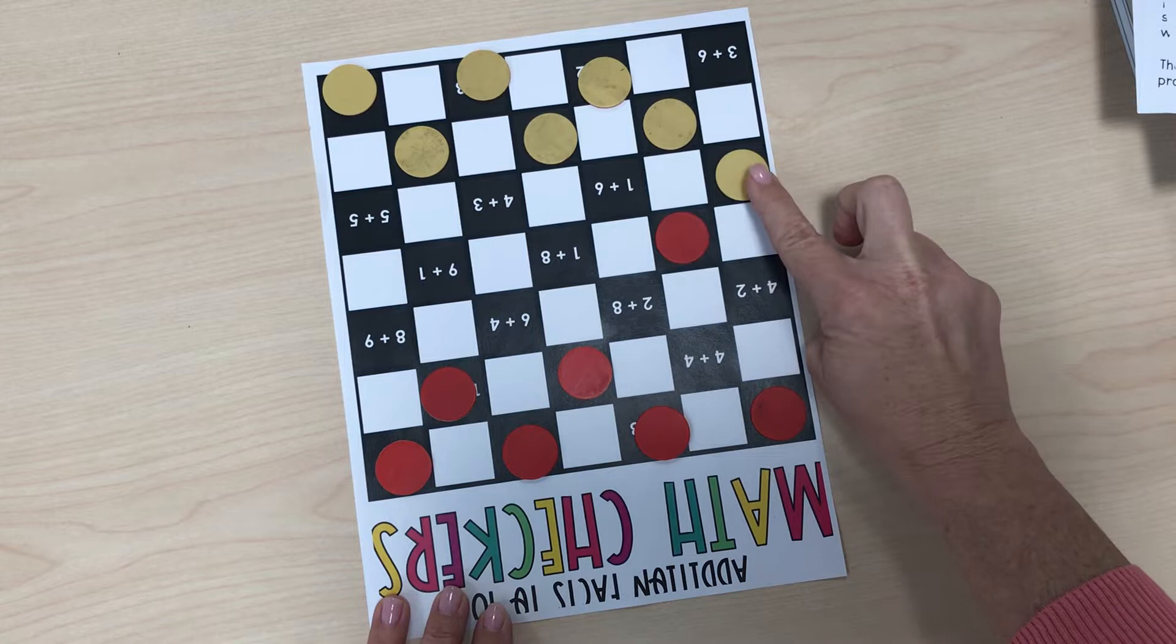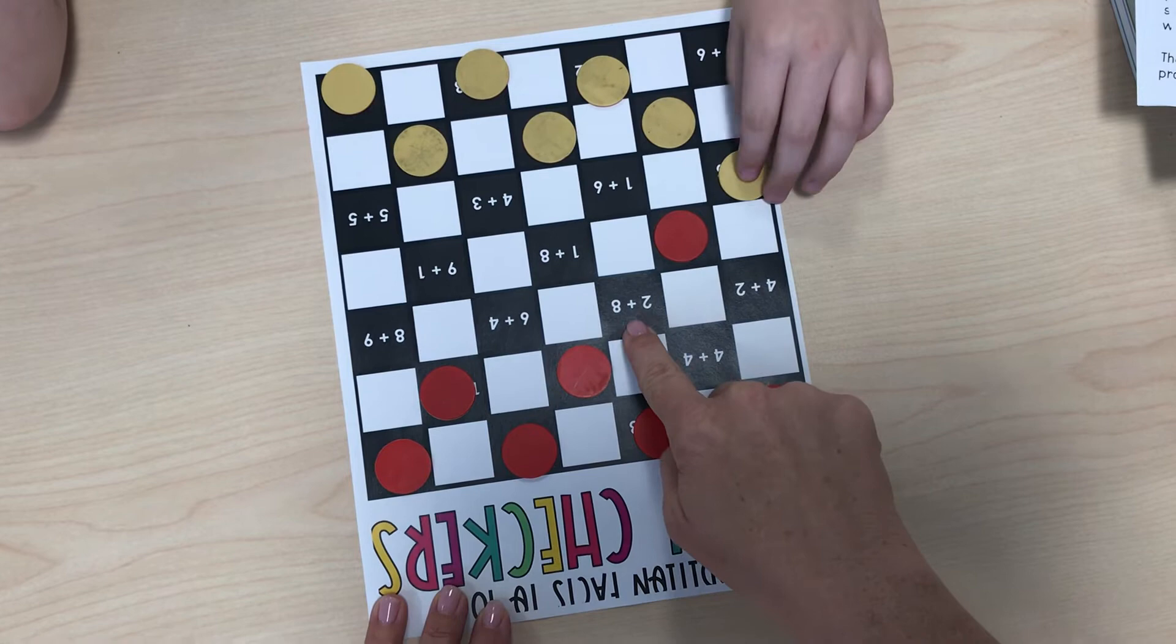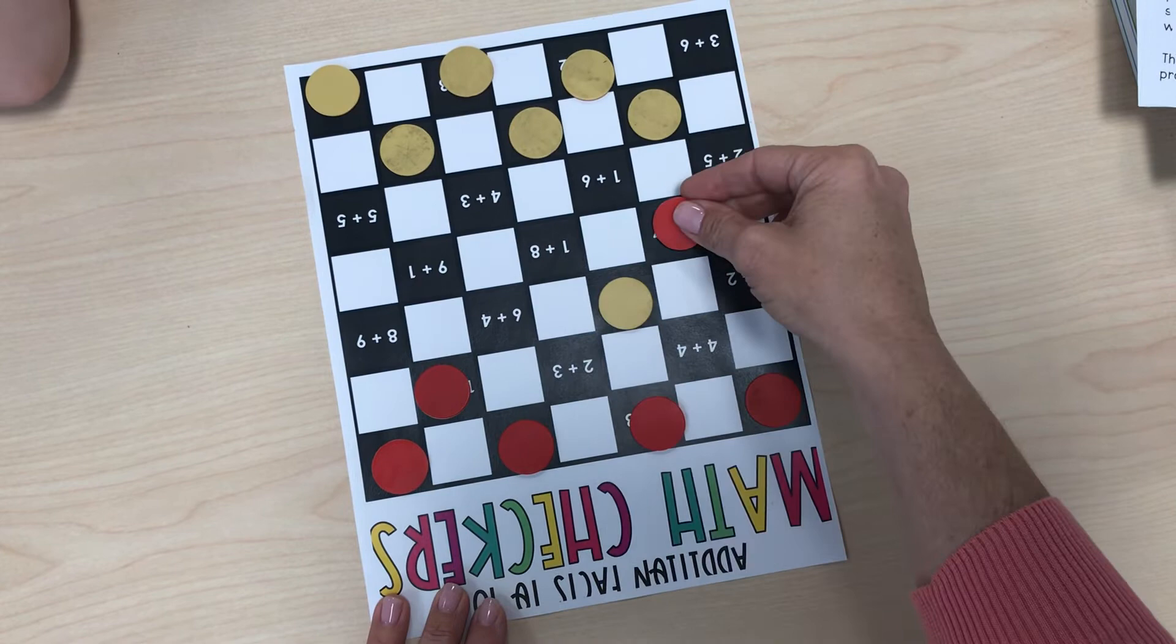Now Jack could jump mine and he could say 2 plus 8 is? Is 10. Now he's going to do it. Jump over here. And then he's going to take mine. So I just lost a piece. Okay. But guess what? I can now jump him. So 3 plus 7 is 10. So now we both have captured one of our opponent's pieces.